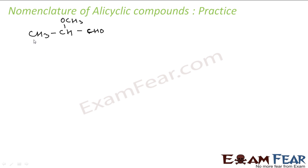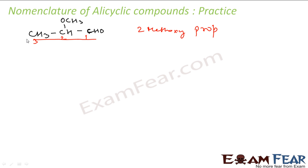Let's name this compound. The longest chain has an aldehyde group, which is highest priority and gets number one. At position two I have a methoxy group — that is the prefix. One, two, three carbons is prop-, all single bonds, and the suffix is -al: 2-methoxypropanal.